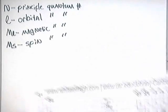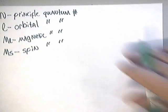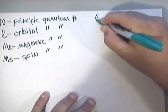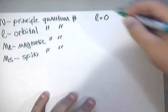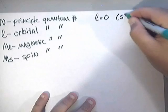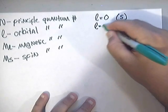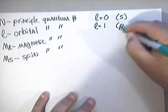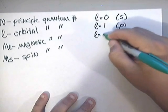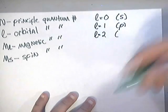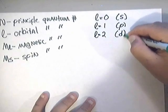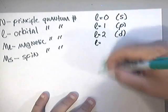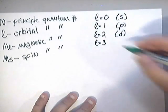And if you want me to label those for you, I will. If your L is equal to 0, that's an S orbital. If your L is 1, then that's a P orbital. If your L is 2, then you're dealing with a D orbital. If L is equal to 3, then you're dealing with an F.